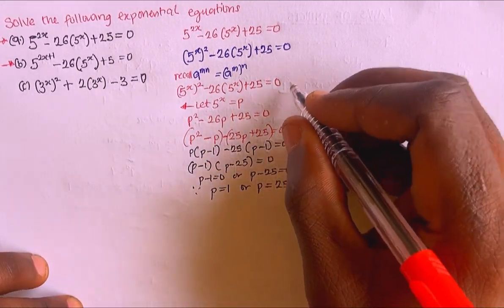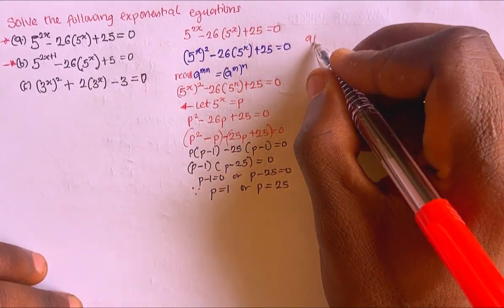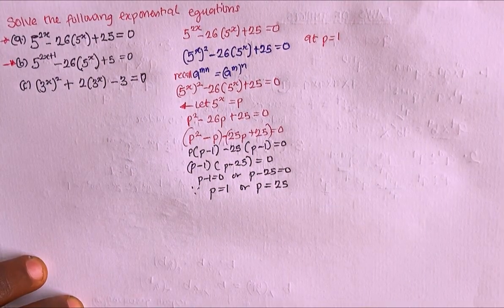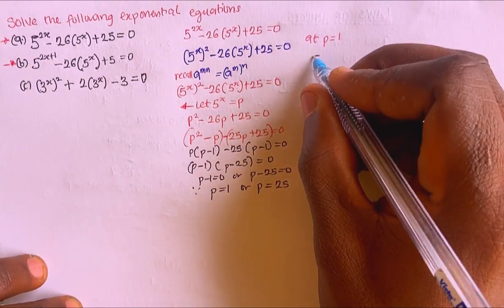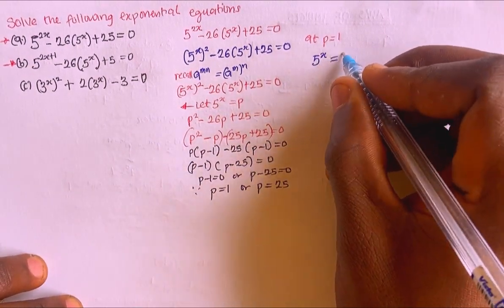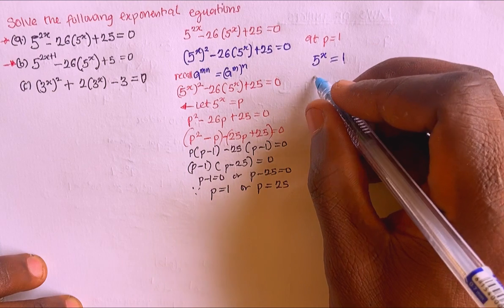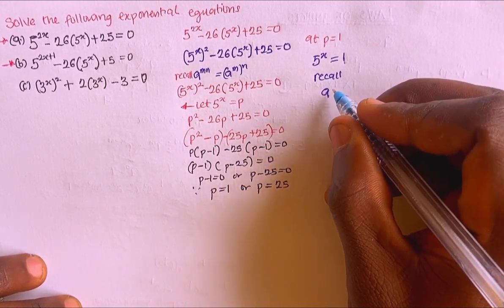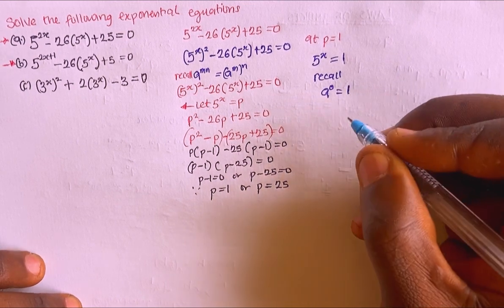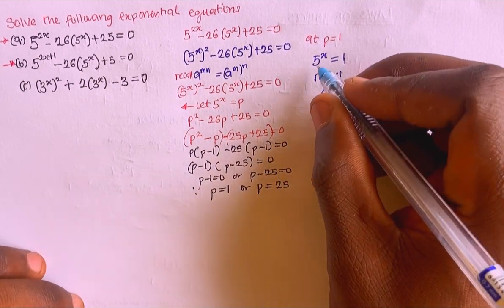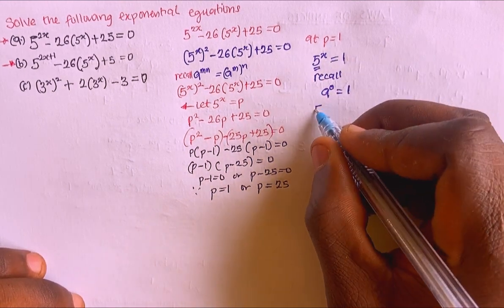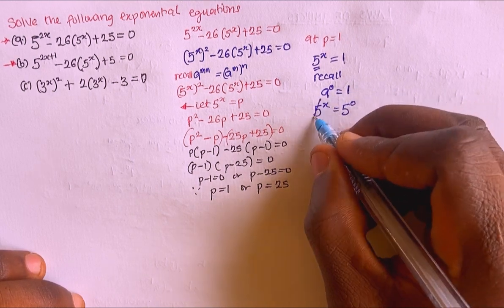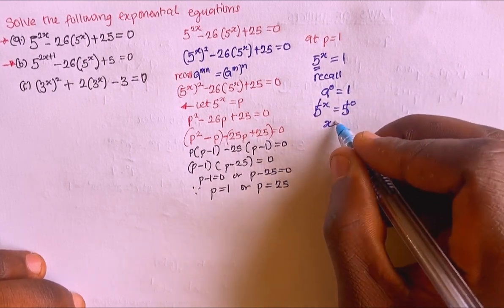Recalling that p equals 5^x: when p equals 1, I have 5^x equals 1. Using the zero law — a^0 equals 1 — the base is 5, so 5^x equals 5^0. Therefore x equals 0.